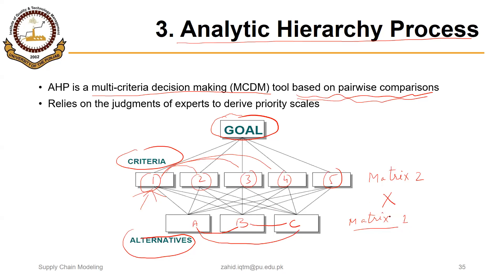From matrix one we get which alternative is best with respect to each factor — a ranking separately for each alternative per criterion. From matrix two we get the information about which criterion is more important than the other. In factor rating we assigned ratings based on judgment and experience, but in AHP we do that based on pairwise comparisons. So we get two pieces of information: which alternative is best per criterion, and the relative weight of each criterion.